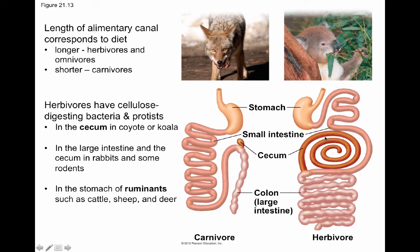The food will go into the cecum, get digested, come back out, and then go into the large intestine. Rabbits also have a cecum, and they actually re-eat certain excretions from the anus — different from actual feces — which are undigested material. This material goes through the digestive system a second time and can then be excreted as actual feces.